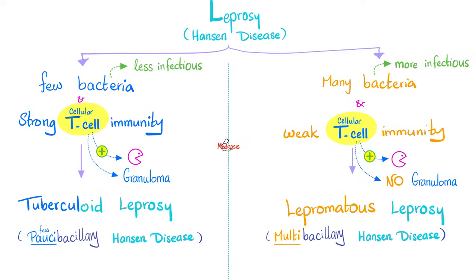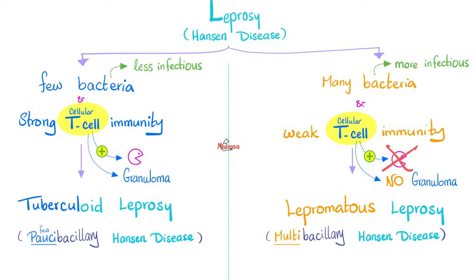Between tuberculoid leprosy and lepromatous leprosy, which one will have a granuloma? When you have strong T-lymphocyte immunity, you will activate your macrophages — they become epithelioid histiocytes and help you make a granuloma. But when you have absent immunity, you do not have any tools to make a granuloma, nor will you be able to stimulate your macrophages to become epithelioid cells.